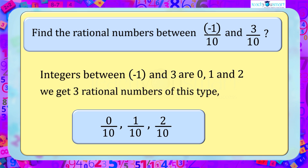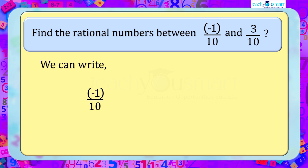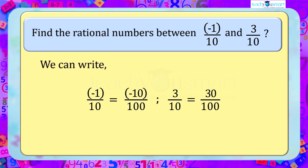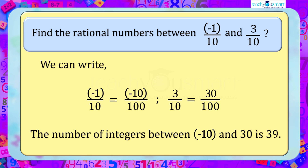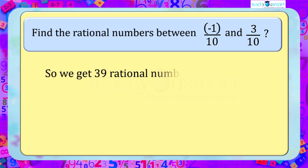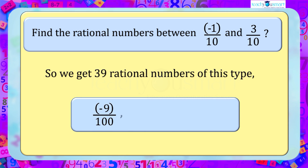But here also we can write minus 1 by 10 as minus 10 by 100, and 3 by 10 as 30 by 100. The number of integers between minus 10 and 30 is 39, so we get 39 rational numbers of this type: minus 9 by 100, minus 8 by 100, etc., up to 29 by 100. Continuing like this, we get an infinite number of rational numbers between them.